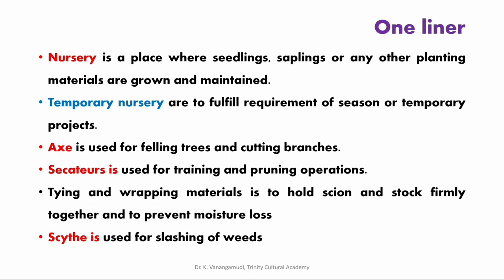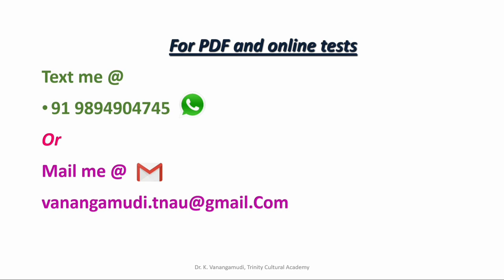The important points in this chapter: nursery is a place where seedlings, saplings, or any other planting materials are grown and maintained. Temporary nurseries are to fulfill the requirement of a season or temporary projects. Axe is used for felling trees and cutting branches. Secateur is used for training and pruning operations. Tying and wrapping materials hold the scion and stock firmly together and prevent moisture loss. Syat is used for slashing of weeds.